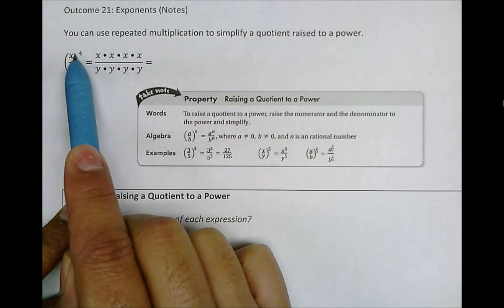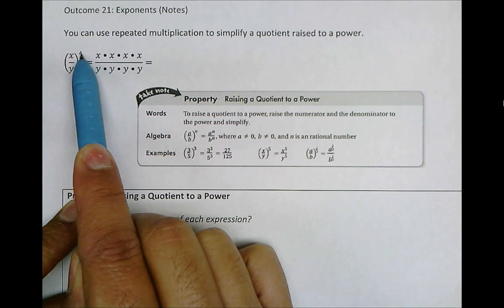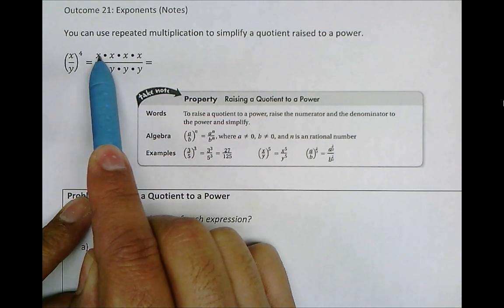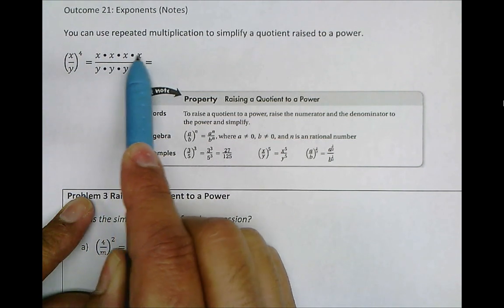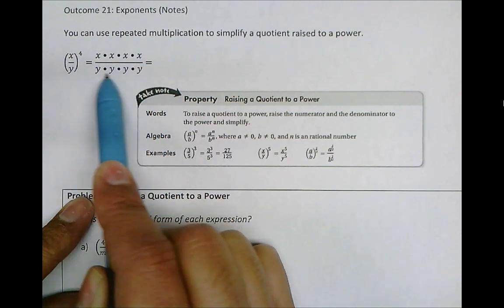So here we have x divided by y together raised to the power of 4. So that means we write this x divided by y out 4 times. So x times x times x times x is in the numerator. y times y times y times y is in the denominator.